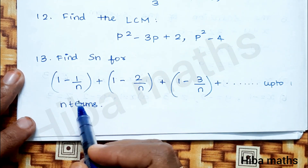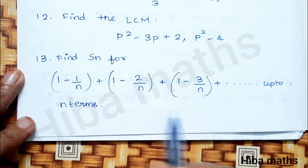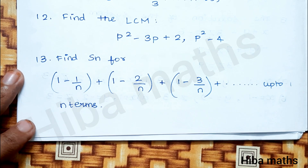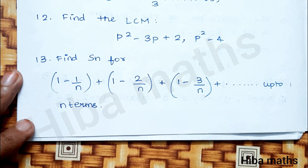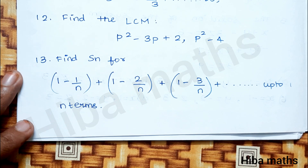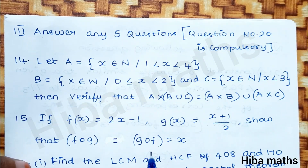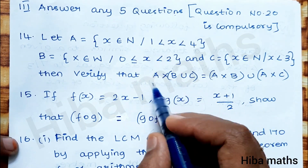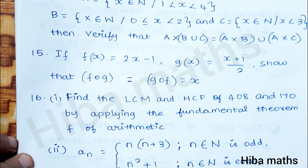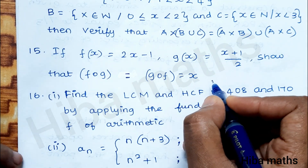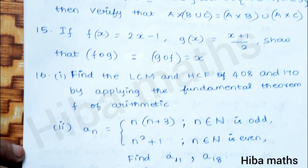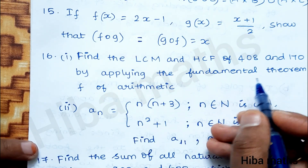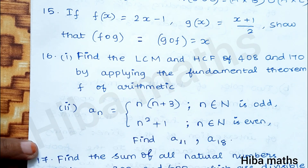The third question is compulsory: sum of n terms — I will tell you the number of n terms. We have three terms. The 14th question is easy — we are going to verify that f of g and g of f equals x. The question is from the last mid-term papers. Find the LCM and HCF of 408 and 170 by applying the fundamental theorem of arithmetic.